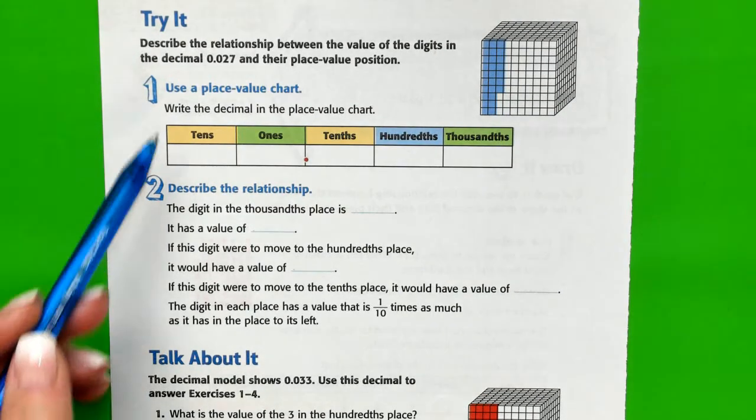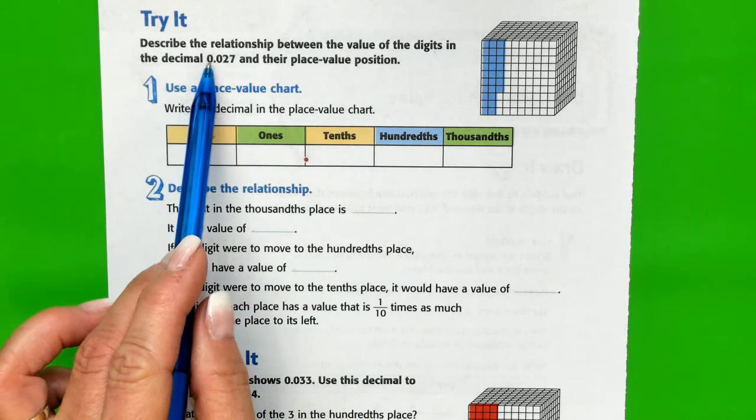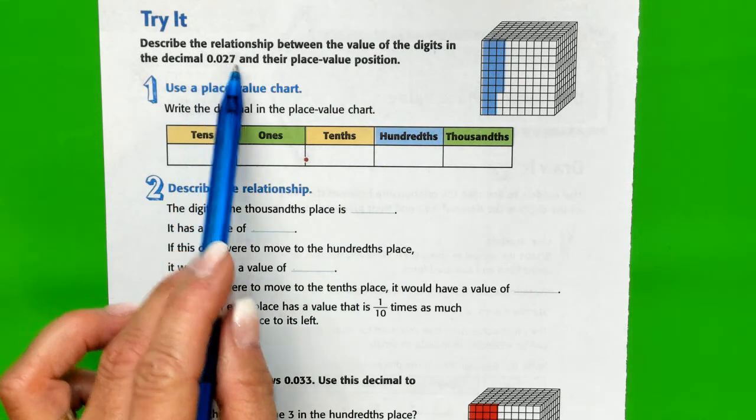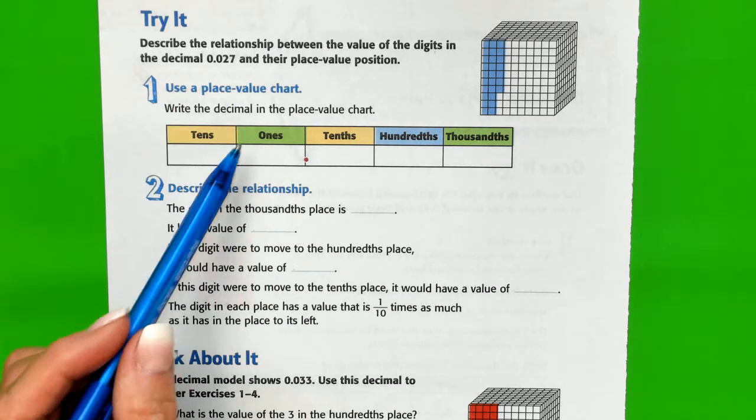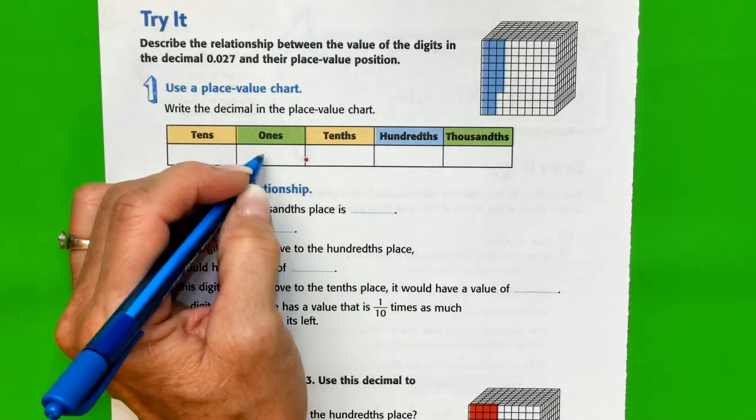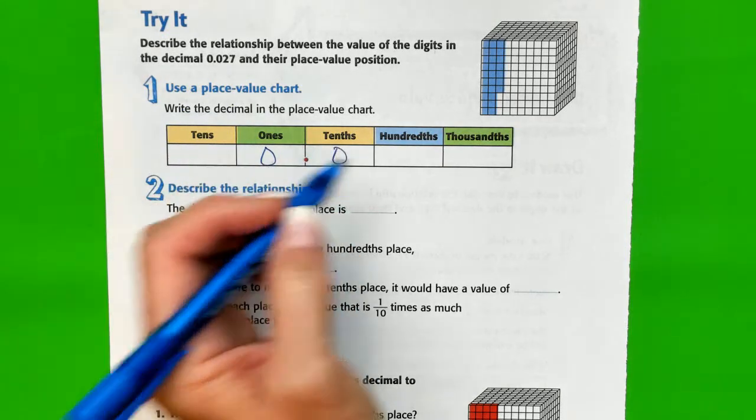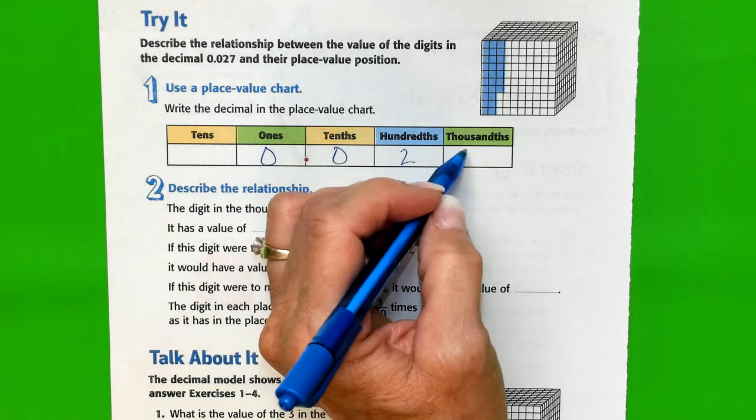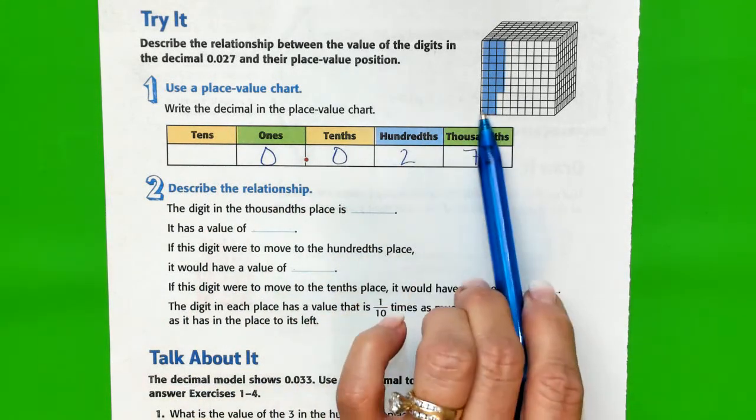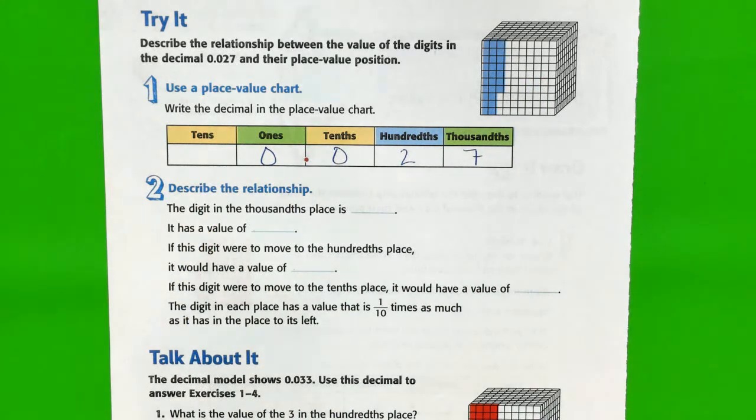It says describe the relationship between the value of the digits in the decimal 0.027 and their place value position. First let's write it in the place value chart. We have no whole ones, we have no tenths, and we have two hundredths and seven thousandths. You can see this is out of a thousand.